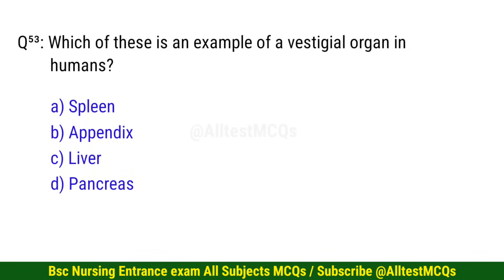Question number 53. Which of these is an example of a vestigial organ in humans? The right option is B: Appendix.